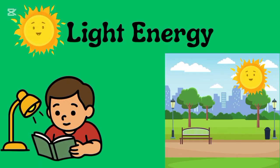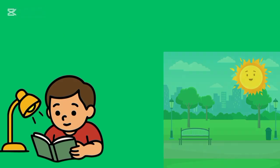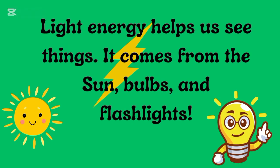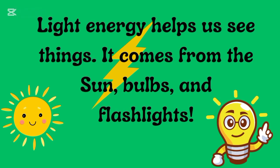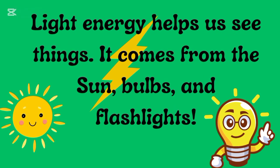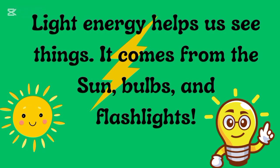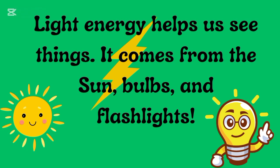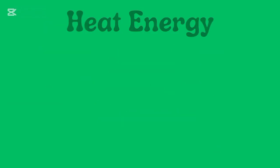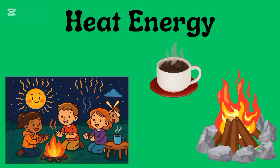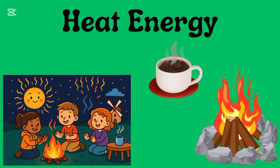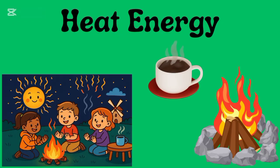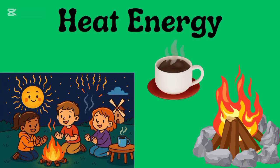The first type is light energy. What is light energy? Light energy helps us see things. It comes from the sun, bulbs, and flashlights. Like in the sunlight, we can see the things.